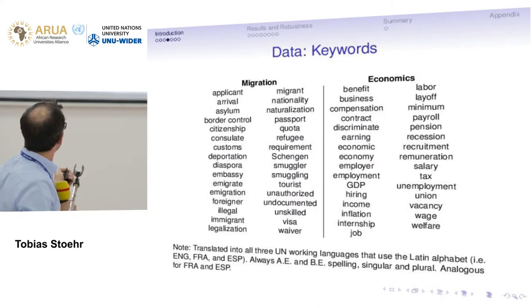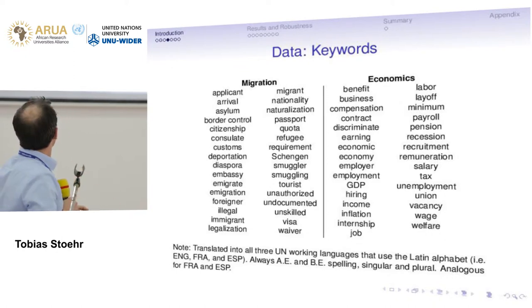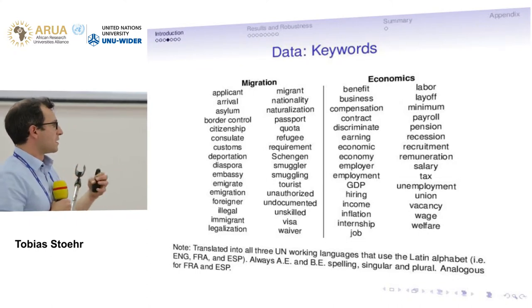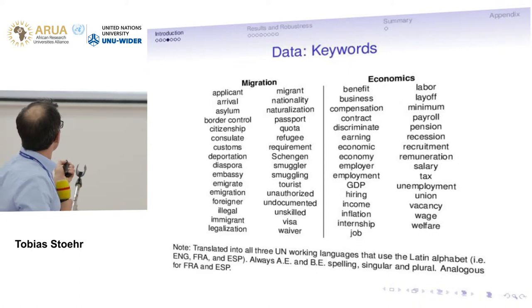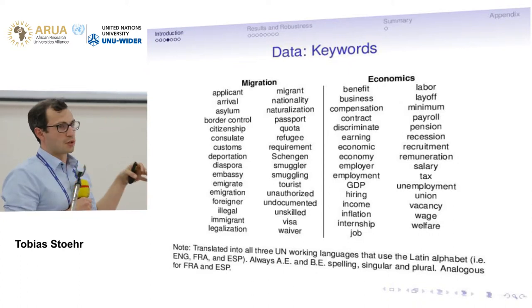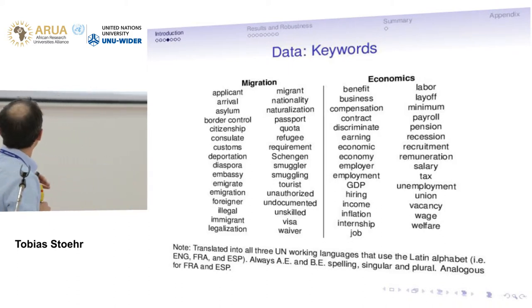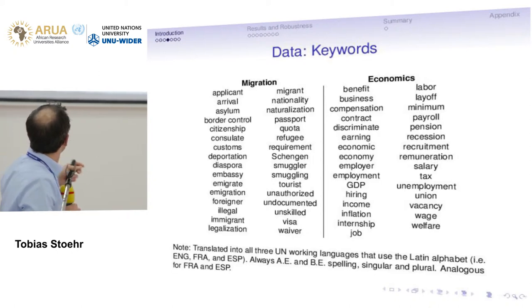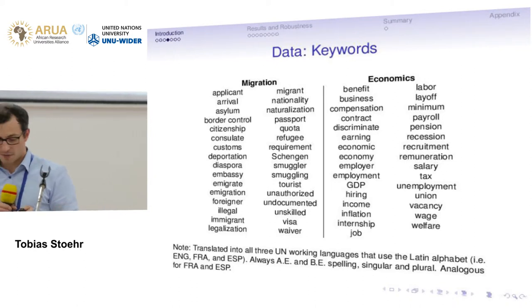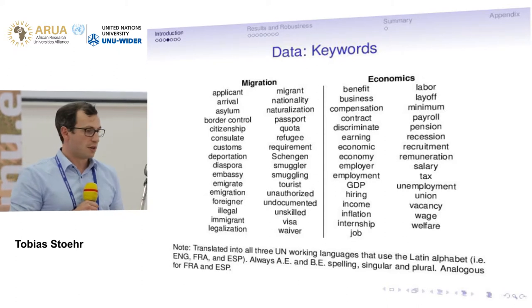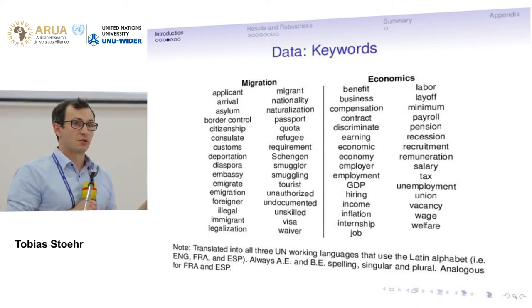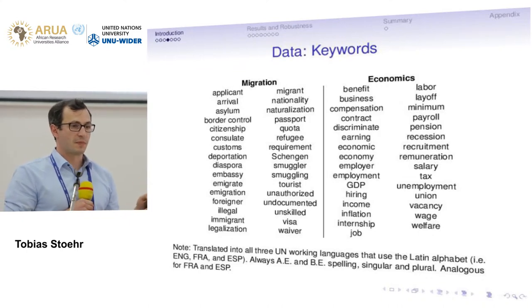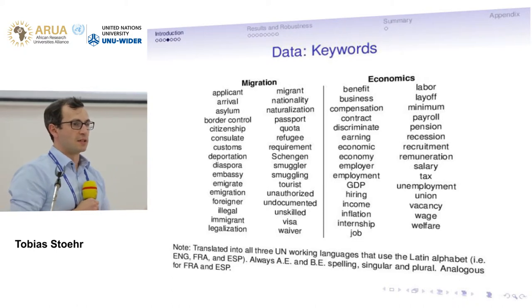We took that website, which is based on a big corpus of written works and looks at correlations of particular words. We entered the word 'migration' and took the words most correlated with it — terms like emigration, visas, undocumented, quotas, multiculturalism. This helped us get down to fewer keywords. We then translated these into French and Spanish as well, and included all kinds of different spellings — British, American, plural, singular, and so on.